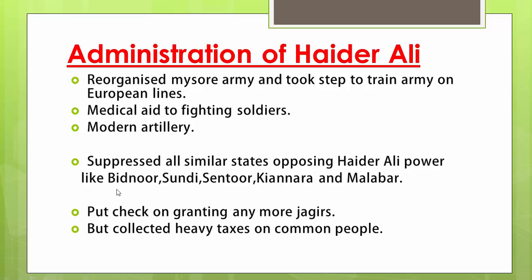With the aid of his army, Haider Ali tried to suppress all similar states opposing him, like Vidnur, Sundi, Sintur, Kinar, and Malabar. He put a check on the reckless granting of jagirs. However, he imposed heavy taxes on the common people, as he was trying to expand the territory and needed money for all the wars.